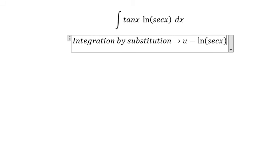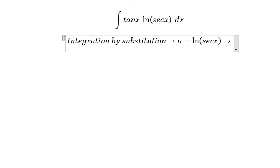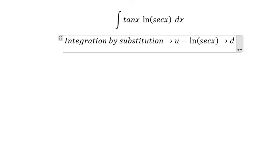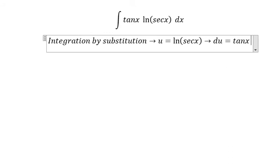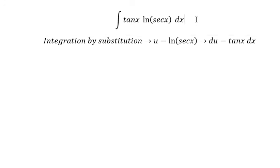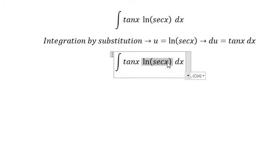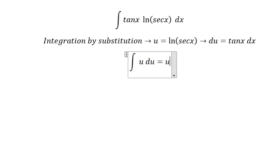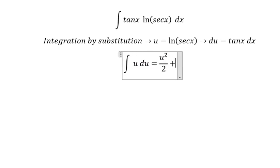If we take the first derivative, you will get du equal to tan x dx. So tan x dx will change to du. This gives us u squared over 2 plus C.